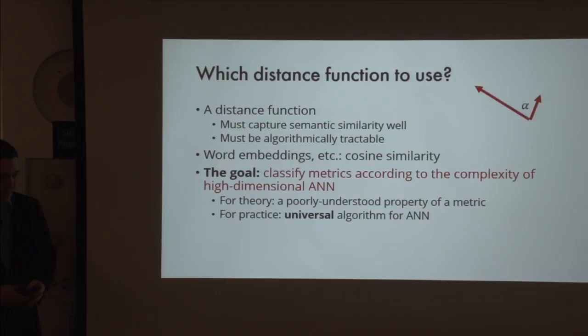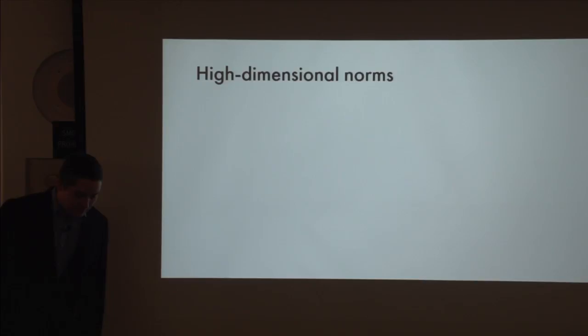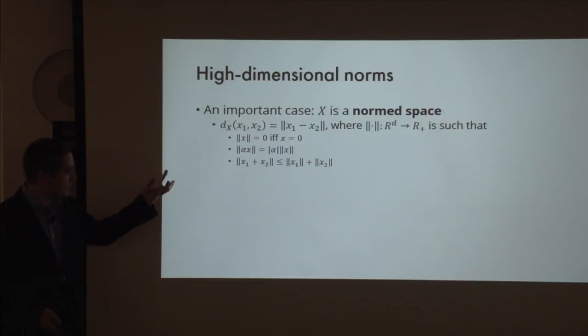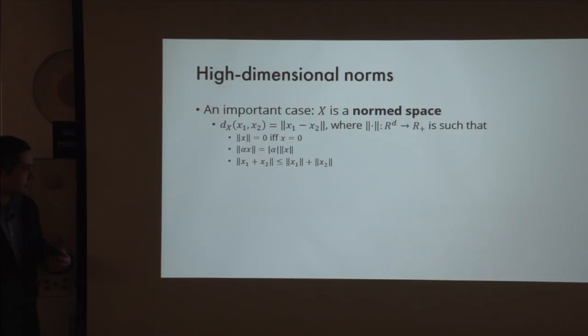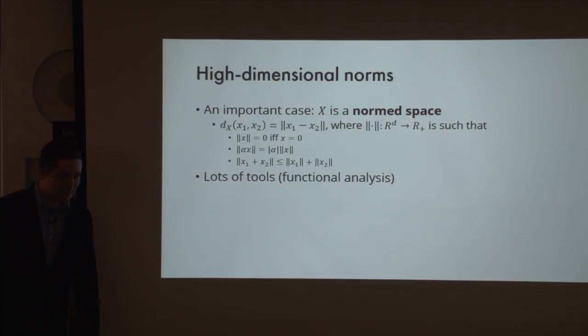Slightly restricting the problem—which makes it mathematically much nicer—instead of general metrics, we ask about norms. A norm is basically a function on R^D that is zero if and only if the vector is zero, is homogeneous, and is sub-additive. It's pretty much a metric on R^D that is consistent with the linear structure, and any norm defines a metric. Norms are nice because there are lots of tools to handle them not available for general metrics—most of functional analysis studies the geometry of normed spaces.